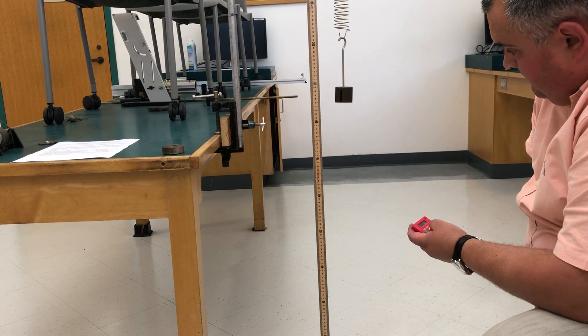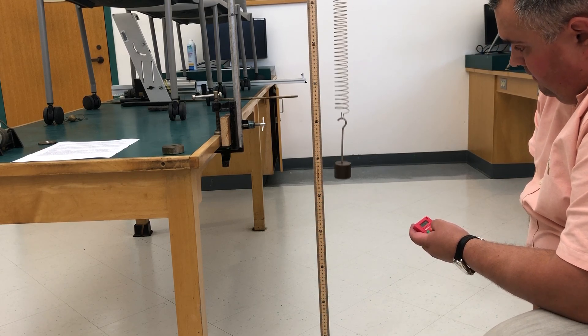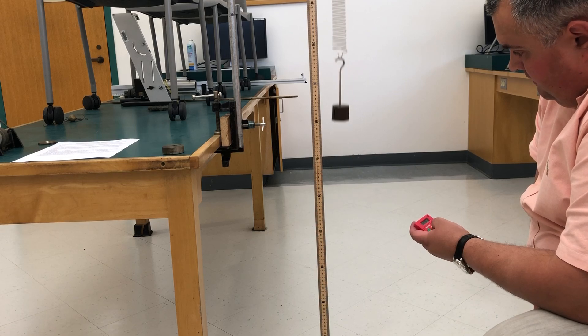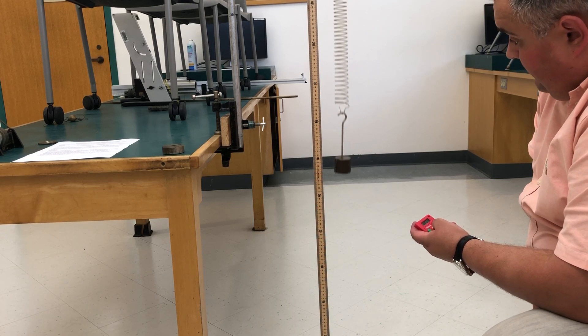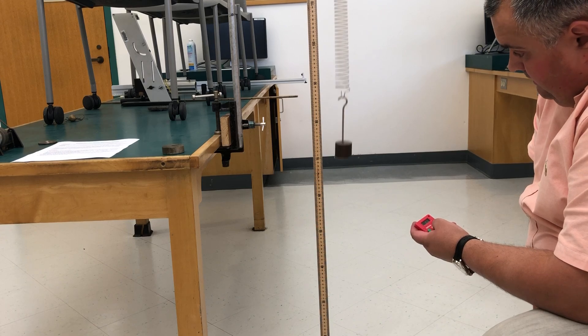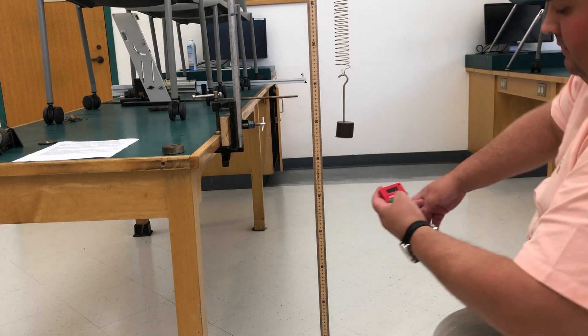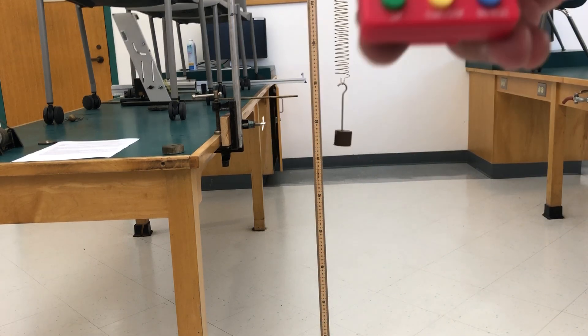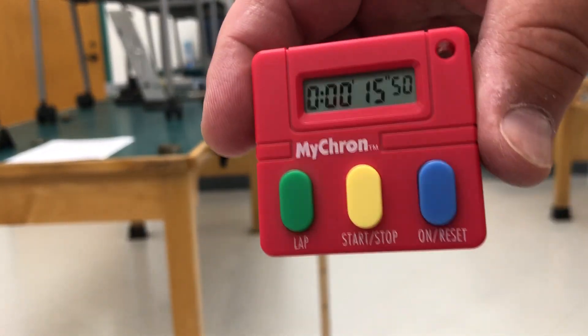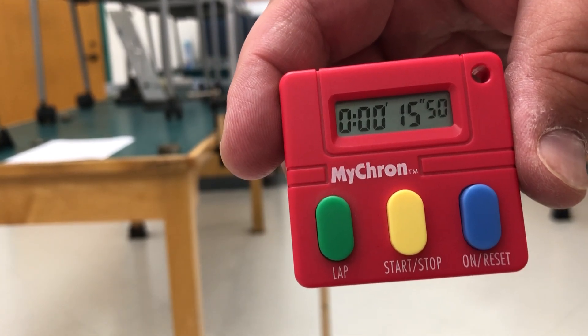One, two, three, four, five, six, seven, eight, nine, ten. The total time for 10 oscillations is 15.5 seconds.